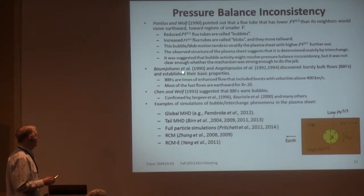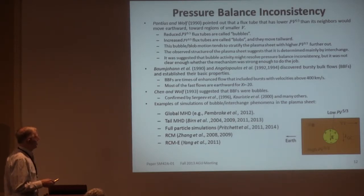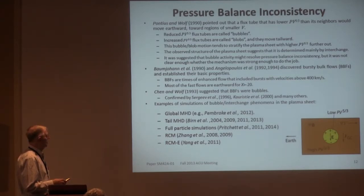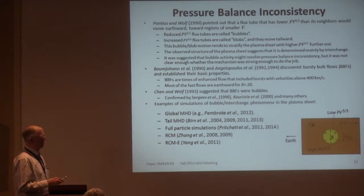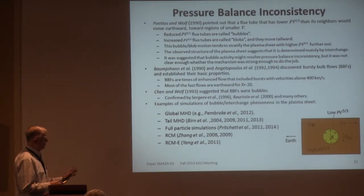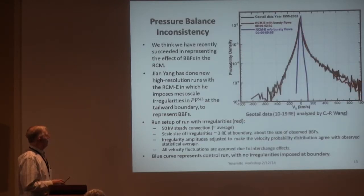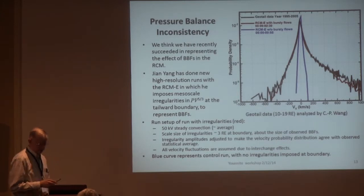Right about the time we wrote that paper, the phenomenon of bursty bulk flows was discovered in the Earth's plasma sheet. These were times of enhanced flow that included bursts with velocities more than 400 kilometers per second, and in the region the RCM tries to model the flows are mostly earthward. We made the obvious association that those BBFs were bubbles, and gradually the observations came to confirm that. There's also been lots of theoretical and computational work on the dynamics of bubbles in the plasma sheet using different codes, but up until very recently we hadn't figured out how to include bursty bulk flows in the Rice Convection Model.